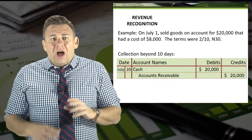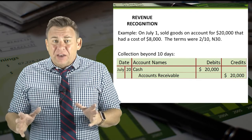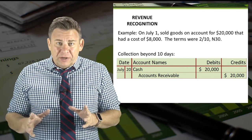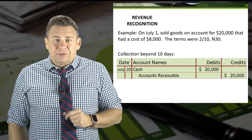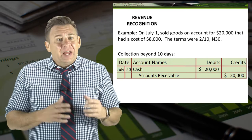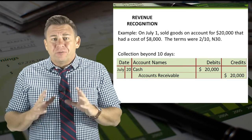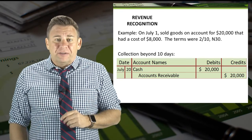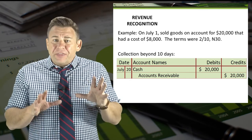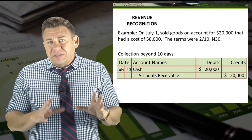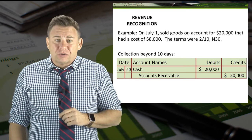On the occasion that the buyer pays beyond the discount period, the journal entry is slightly different. We debit cash and credit accounts receivable for the full amount received of $20,000. The method shown in this video is sometimes called the gross method.